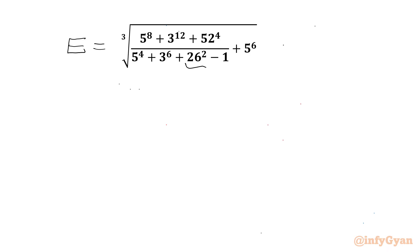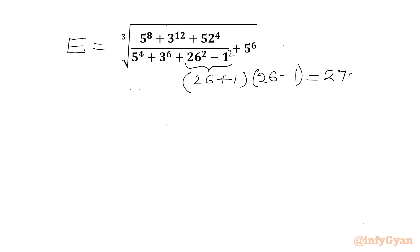Now I will consider 26 squared minus 1 squared. So using the identity a squared minus b squared equals a plus b times a minus b, we get 26 plus 1 times 26 minus 1, which is equal to 27 times 25. So I can write 27 as 3 cubed and 25 as 5 squared.